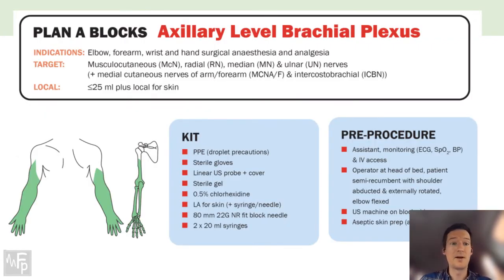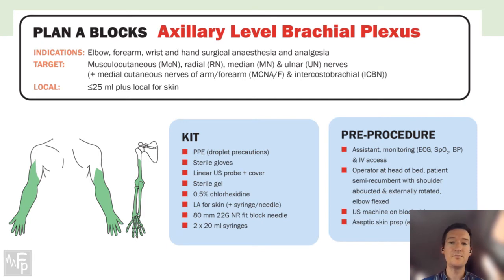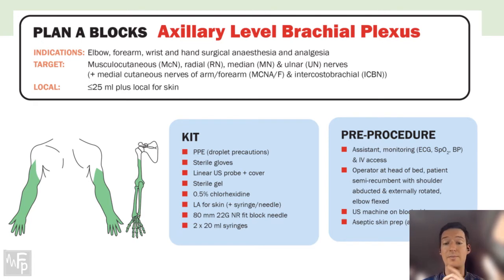Axillary level brachial plexus: indications are anything below the elbow - elbow, forearm, wrist, hand surgery. You're targeting the musculocutaneous, radial, median, and ulnar nerves, and also the medial cutaneous nerves of the forearm and the intercostal brachial nerves. You don't really need more than 20 mils of local anaesthetic - just one syringe. The needle needs to be an 80 or 100 millimetre block needle depending on habitus. Pre-procedure: ultrasound machine, asepsis, trained assistant, monitoring, IV access. The dermatomal and osseous spread you'd expect is shown in the anatomy image.